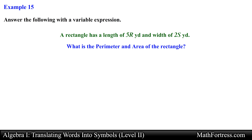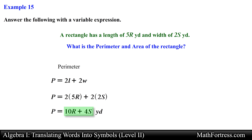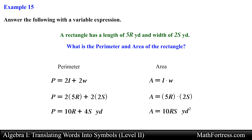Let's work on the final example: 'A rectangle has a length of 5r yards and a width of 2s yards. What is the perimeter and area?' To find the perimeter we use p = 2l + 2w, giving us 10r plus 4s. For the area, using length times width and substituting, the final variable expression for the area of the rectangle is 10rs square yards.